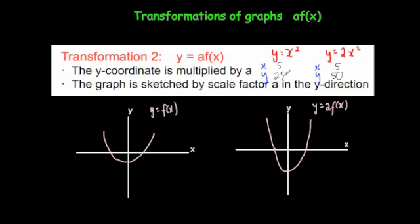Notice that the y coordinate has been doubled and also we had a 2 in front of the x squared. So if you're doing a function and you're transforming by having an 'a' in front of it, or multiplying it by 'a', the y coordinates are multiplied by a. So if you've got a 2 in front of it, all the y coordinates will be doubled; a 3 in front, they'll be trebled; a half in front, all the y coordinates will be halved. So overall, the graph is stretched by a scale factor of a in the y direction.